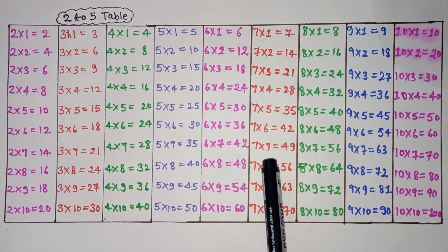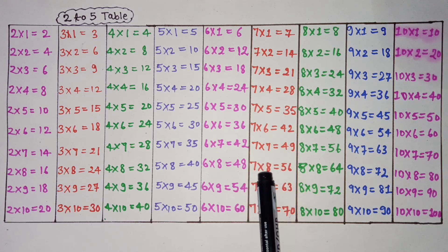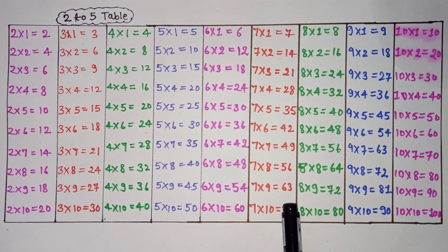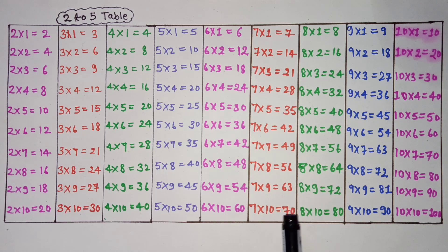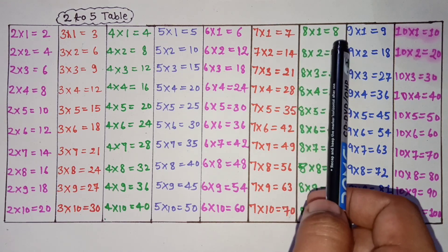7 7s are 49, 7 8s are 56, 7 9s are 63, 7 10s are 70. 8 ones are 8.